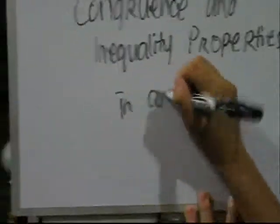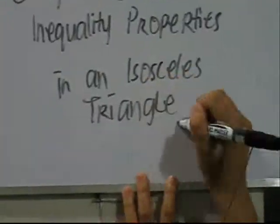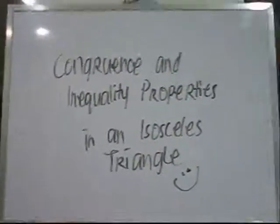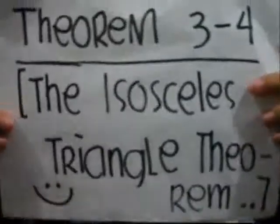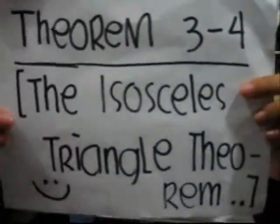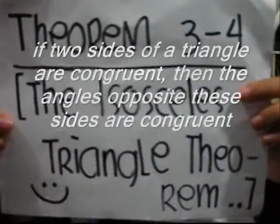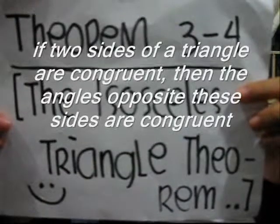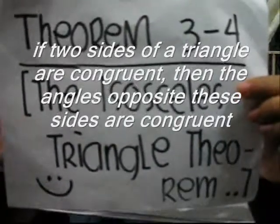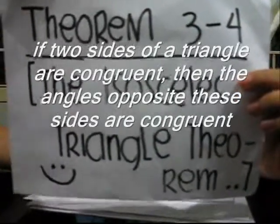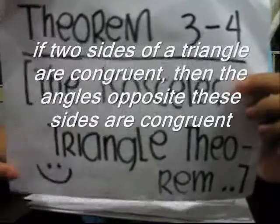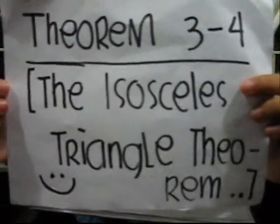Congruence and Inequality Properties in an Isosceles Triangle. Theorem 3-4, the Isosceles Triangle Theorem, states that if two sides of a triangle are congruent, then the angles opposite these sides are congruent.